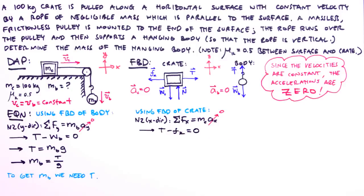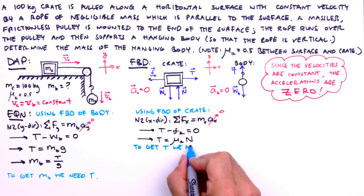Adding the friction force to both sides and substituting our definition for kinetic friction, we get t equals the product of the coefficient of kinetic friction and the normal force. We've yet to determine a value or expression for the normal force, so to get t, we first need n.